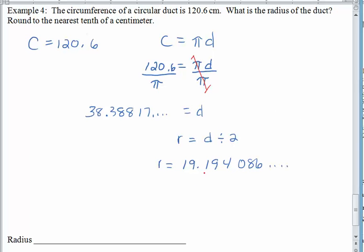And the radius is equal to the diameter divided by 2. So what you need to do with your calculator is just push divided by, and then 2. And it will use the previous answer with all of its decimal places. And then we can round the final result. So on your calculator, you should see 19.194086, a bunch of stuff.